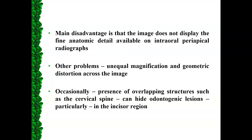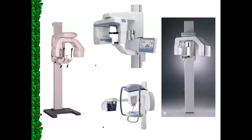However, it is not without limitations. It does not display the fine anatomical detail available in intraoral periapical radiographs. Other problems include unequal magnification and geometric distortion across the image, especially for structures in front of or behind the focal trough. Occasionally, overlapping structures such as the cervical spine can hide odontogenic regions, particularly in the incisor region.